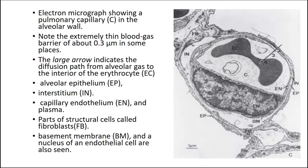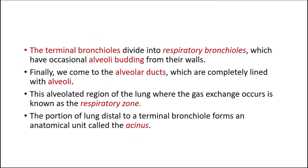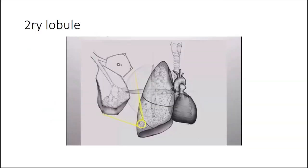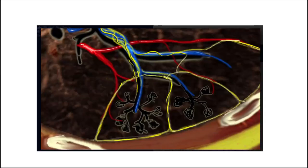This is not actually the lecture; I just want to go over the basic anatomy of the lung, which will help us when talking about a high-resolution CT scan. The basic unit of the lung is what we call the secondary lobule, which is about one to one and a half centimeters and forms the whole lung.